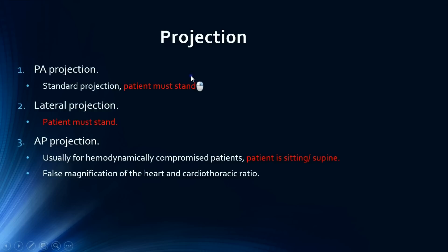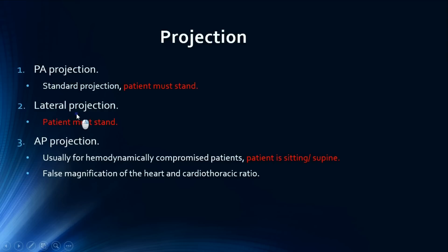Moving to the projection of the chest radiograph, in general we have three main projections. The first is the PA projection — posterior anterior — which is the standard and most common projection, but the patient must be able to stand. The second is the lateral projection, and the patient must also be able to stand. The last is the AP projection — anterior posterior — which is done when the patient is sitting down or in supine position, usually in hemodynamically compromised or ill patients.